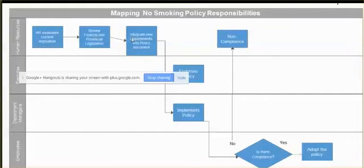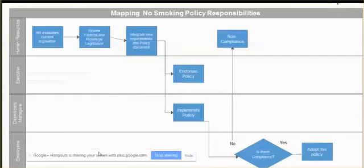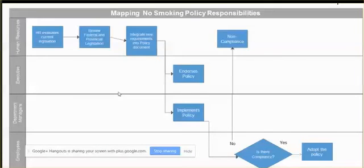So the real intent behind including swim lanes and process documentation in your policy analysis and research phases is just to help you sort of document out and draw out all the key stakeholders and all the different steps that are going to be happening when you review your document.